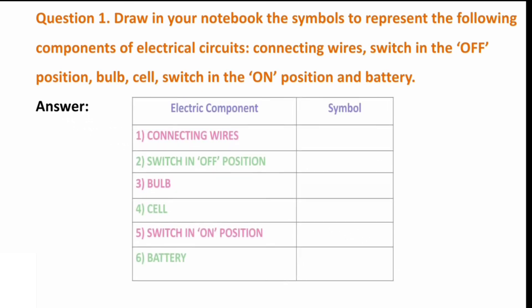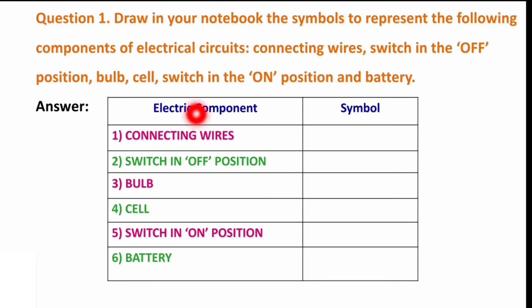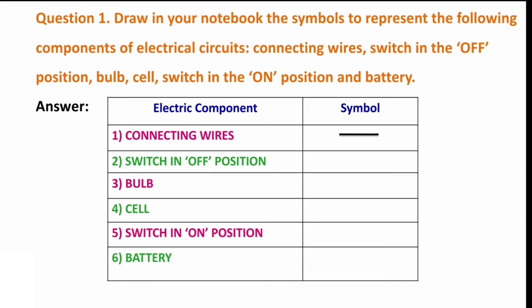So let's see the answer. Here electrical components are given and we need to draw their symbols. First one is connecting wires, which is represented by a line. Next one is switch in off position. Whenever the switch is in off position, it doesn't allow the current to pass through it because the circuit is not complete. The symbol is open here, so current will not flow.